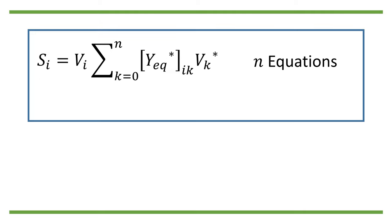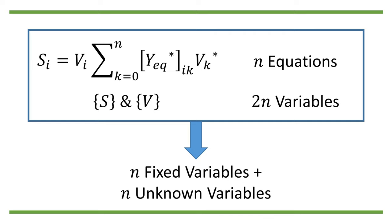If we look closely at the summation form of the equation, we can see that it has n separate equations, where n is the number of nodes. It also involves 2n separate variables: S and V for every node i. This means that we will need to set n variables as fixed to solve for the rest of the n unknown variables.